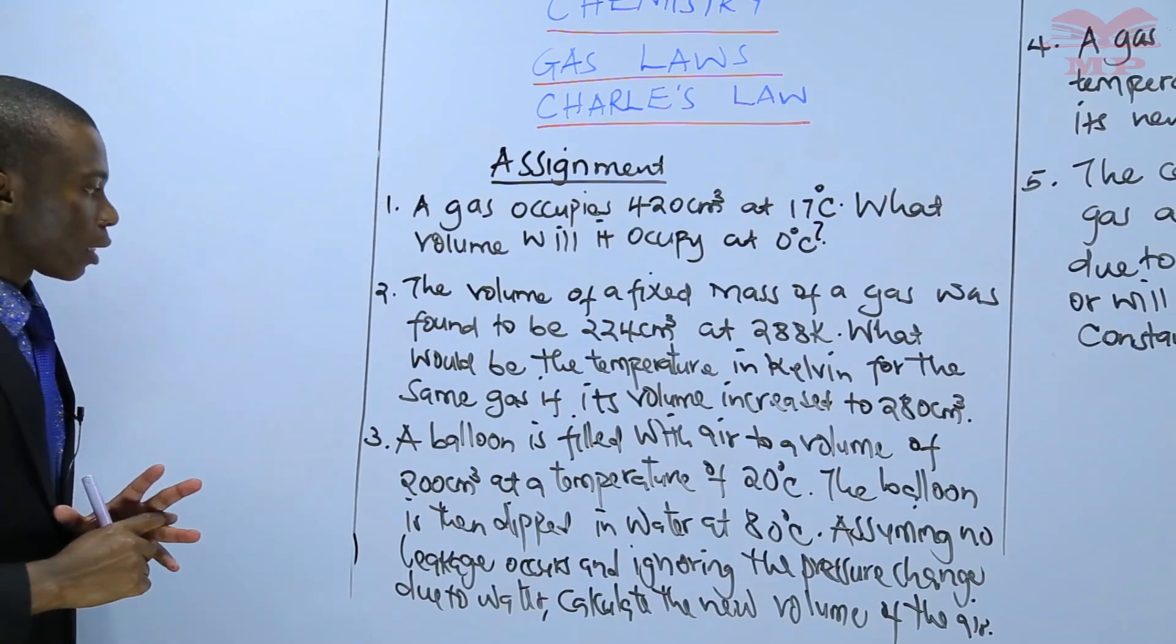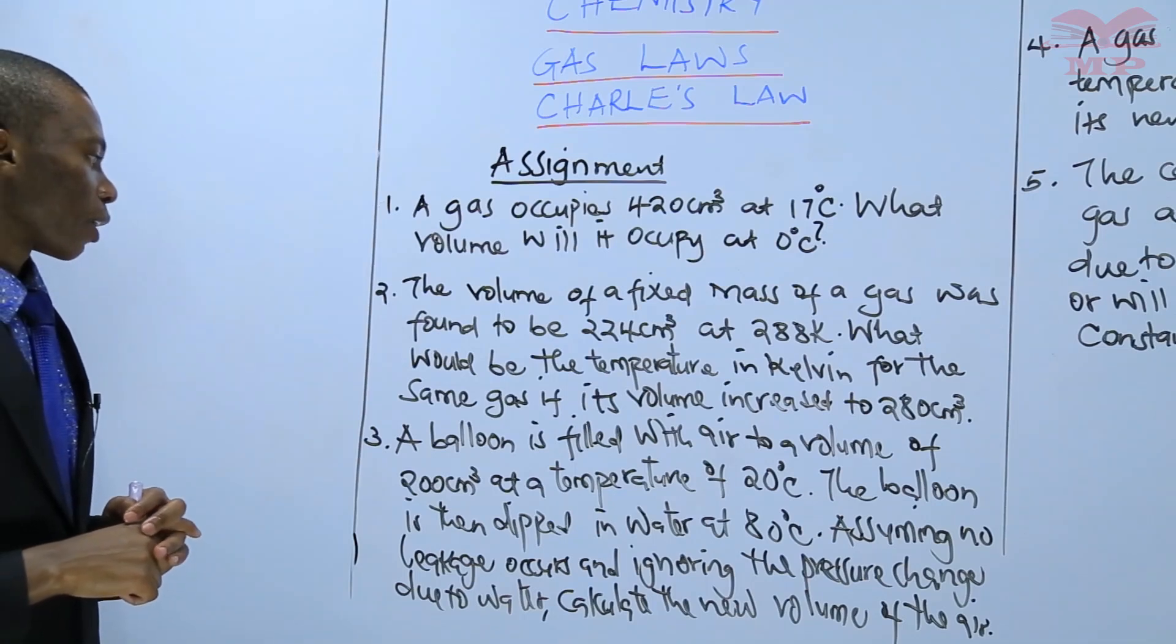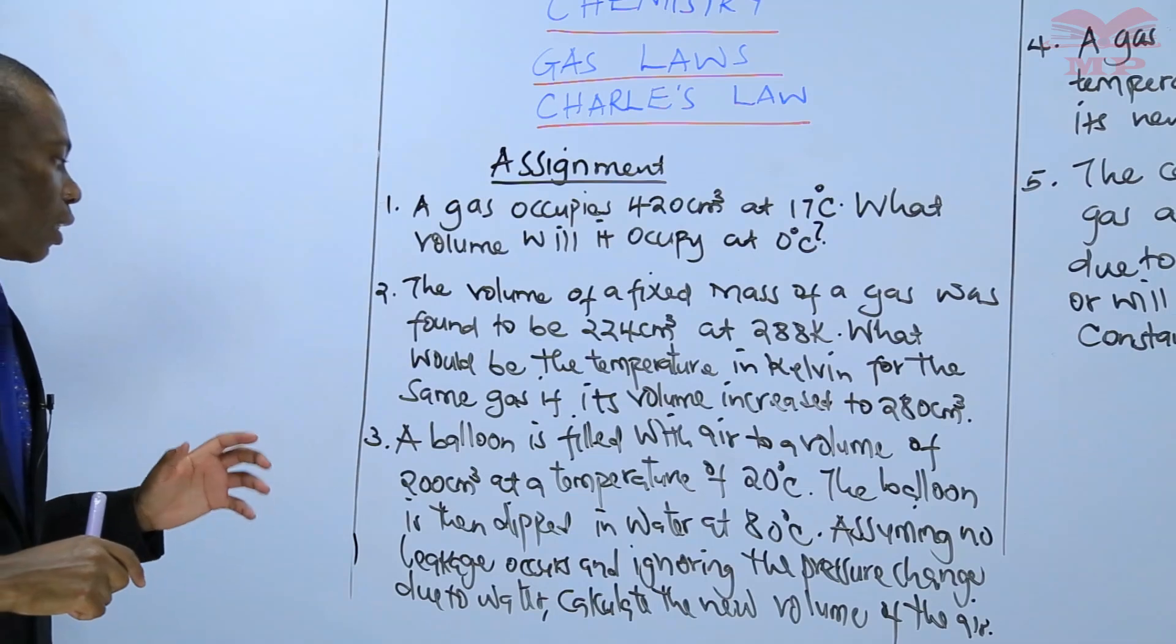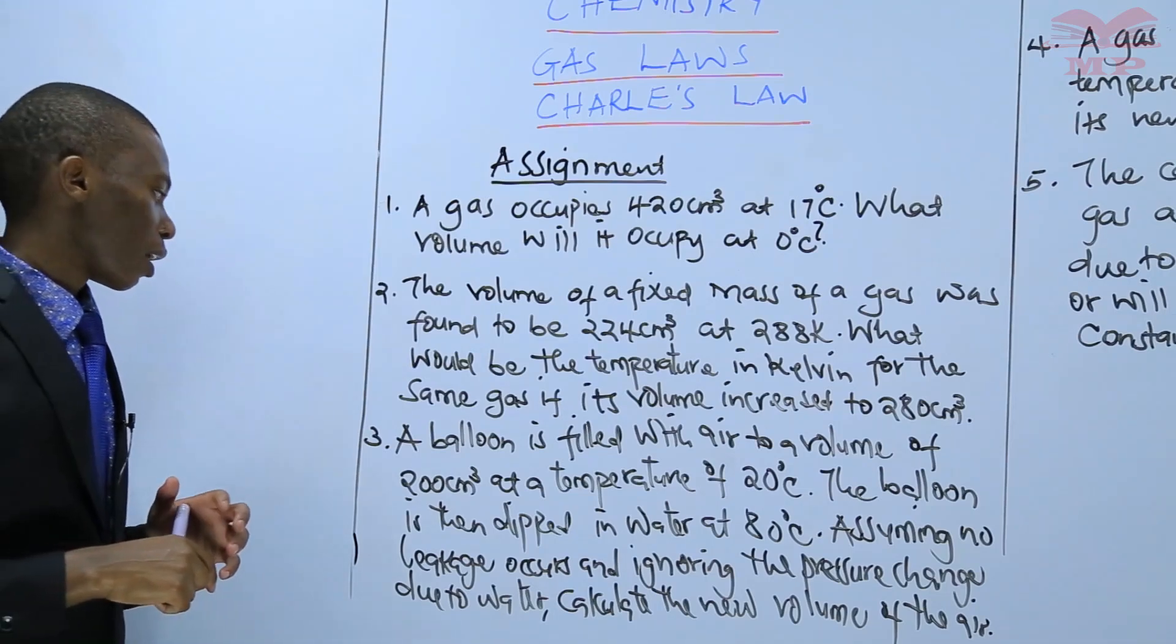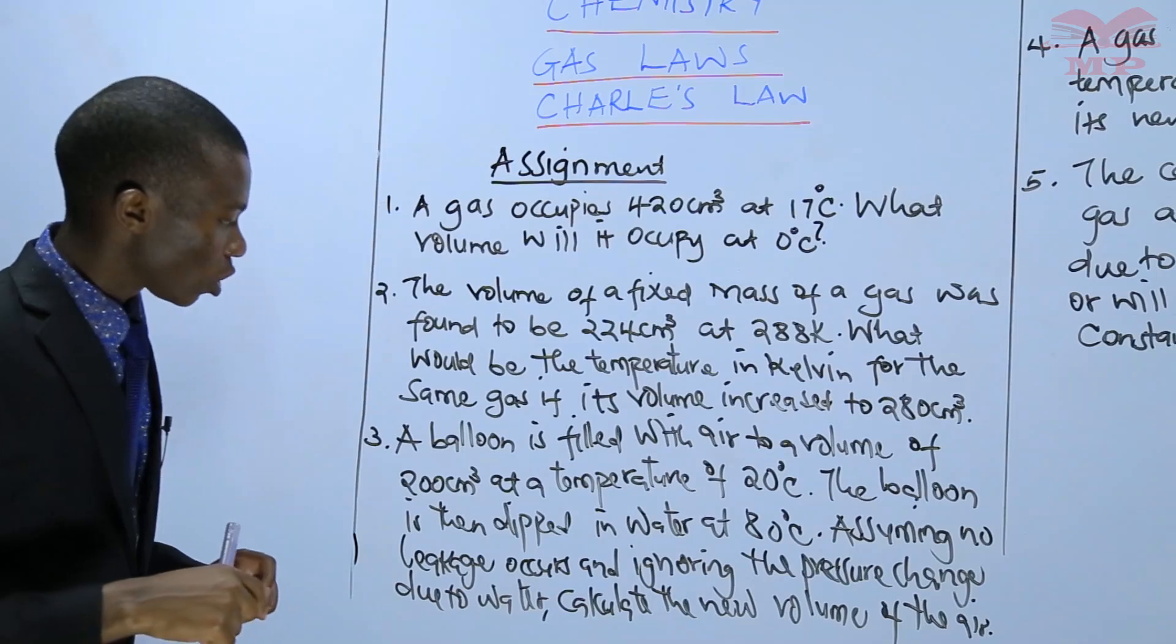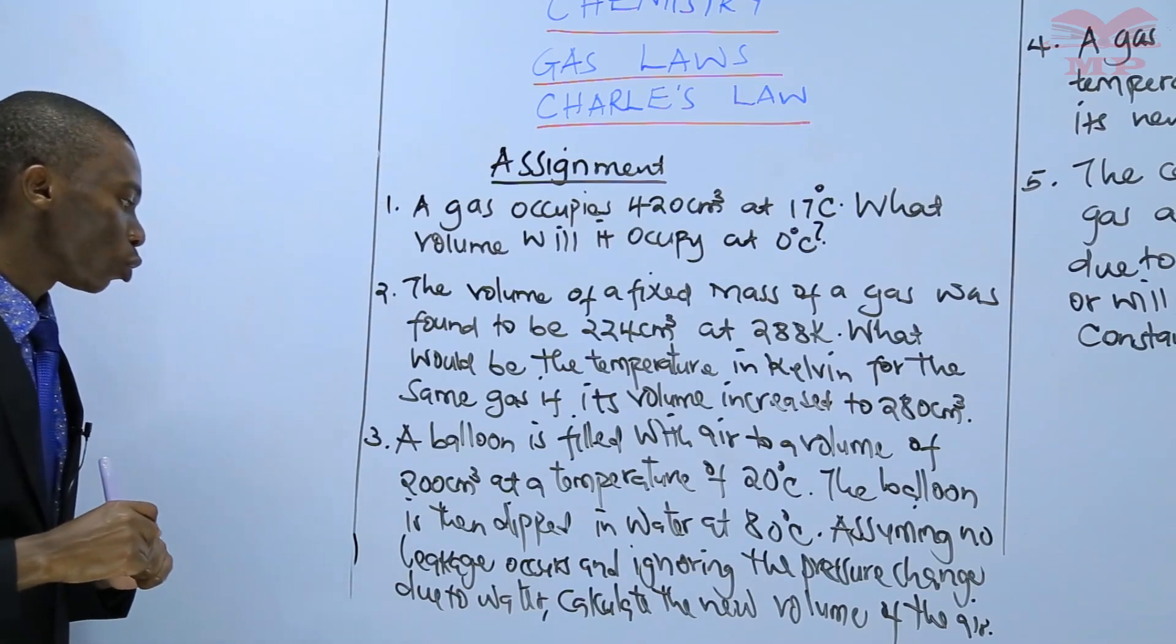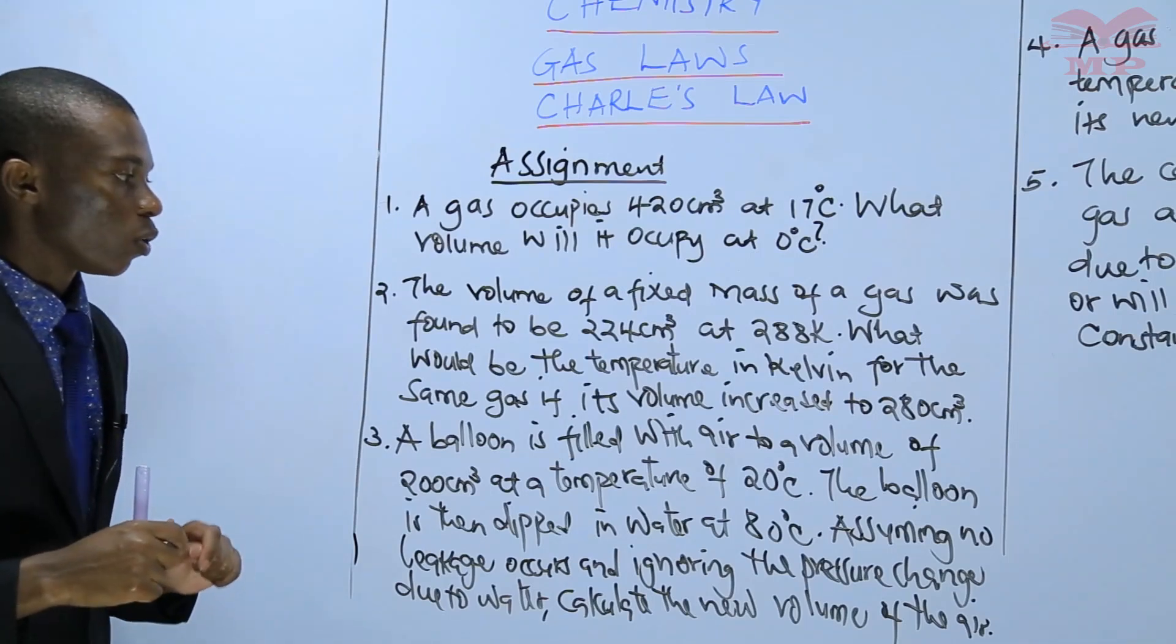Number three, a balloon is filled with air to a volume of 200 centimeters cubed at a temperature of 20 degrees Celsius. The balloon is then dipped in water at 80 degrees Celsius. Assuming no leakage occurs and ignoring the pressure change due to water, calculate the new volume of the air.